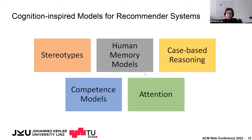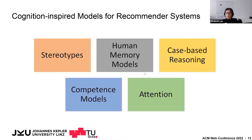More concretely, cognitive models have been used in recommender systems research in several categories: one category employs stereotypes as cognitive heuristics in algorithm design; another uses human memory models for recommender systems design — this is a large body of work; then case-based reasoning, which is heavily influenced by cognitive science findings; competence models; and attention, as a way to use findings from cognition in recommender systems.